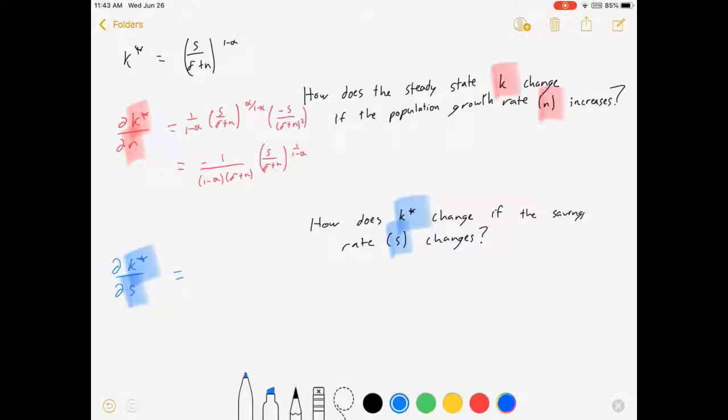Now this one was going to come out, I'll just skip a little bit of algebra. Actually, it's calculus, but whatever. 1 over s minus s alpha times s over delta plus n to the 1 over 1 minus alpha. And that comes out as positive.